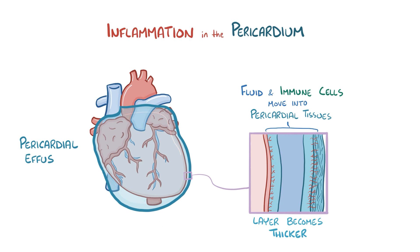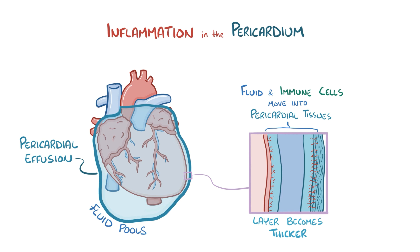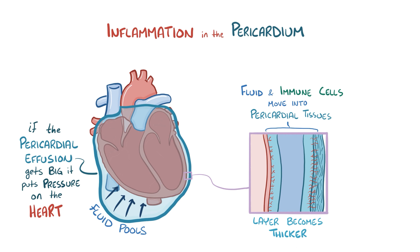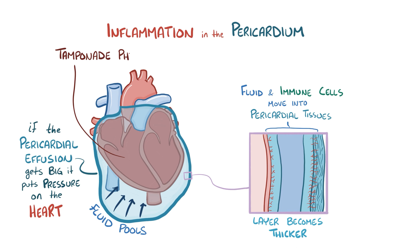A pericardial effusion can also develop. That's when pericardial fluid begins to pool in the pericardial space because the serous pericardium can't remove it as quickly as it comes in. If that pericardial effusion gets really big, it can start putting pressure on the heart, preventing it from fully relaxing between contractions. This can lead to tamponade physiology, where the cardiac chambers can't fill with blood properly, causing a decrease in cardiac output — which can be a medical emergency.